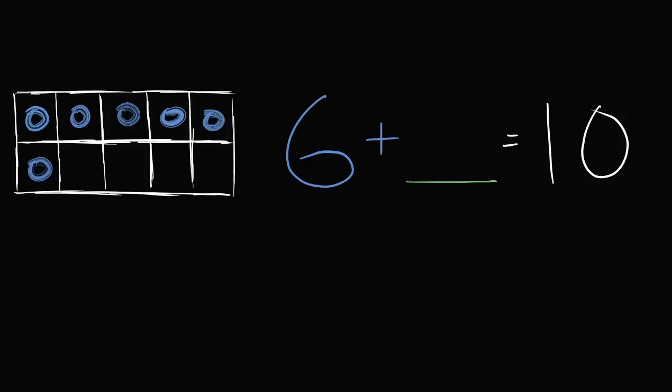Let's do it together. So we now have one, two, three, four, five, six circles. We have 10 boxes here. One, two, three, four, five, six, seven, eight, nine, 10.